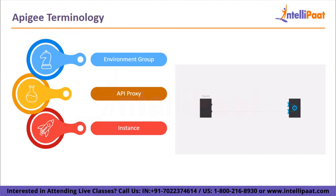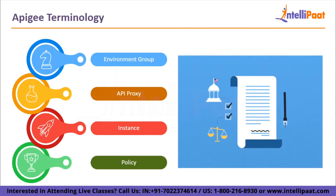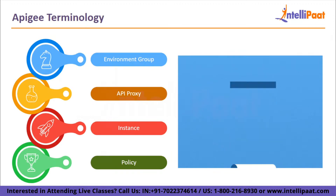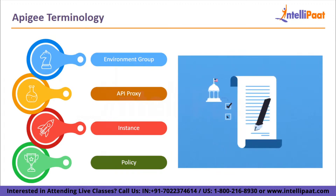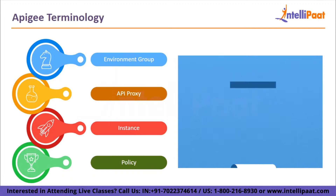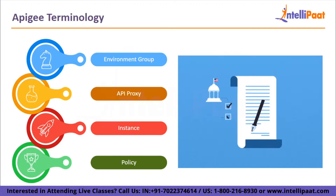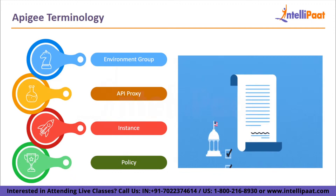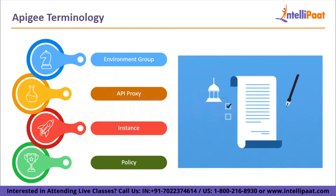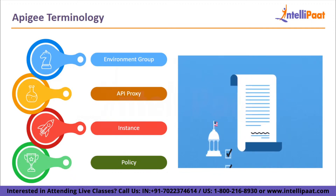There can only be one Apigee instance per Google Cloud area, where instances correspond to geographic regions. Lastly, we have policy — a policy is a processing stage that an API proxy executes. Many pre-filled rules are offered by Apigee to carry out various API operations such as changing message formats or implementing access control.